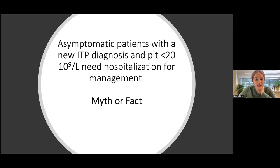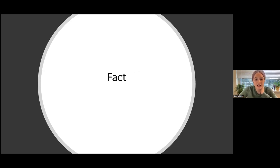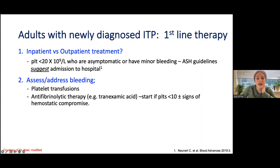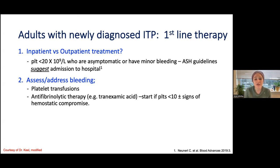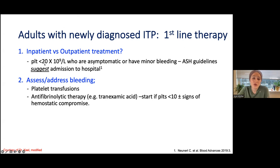This is actually a fact. The ASH guidelines recommend that for newly diagnosed patients with ITP — and it's very important to remember new diagnosis — these patients are recommended to be treated as inpatients if their platelets are less than 20, even if they're asymptomatic or not having a measured bleed. You admit them, see how they respond to treatment, and initiate therapy.